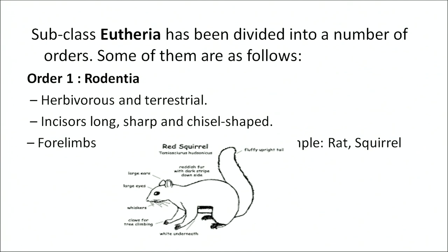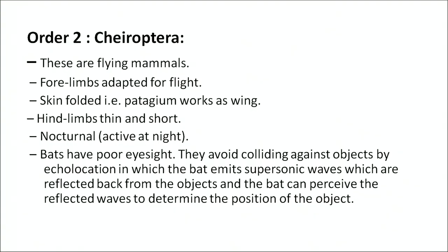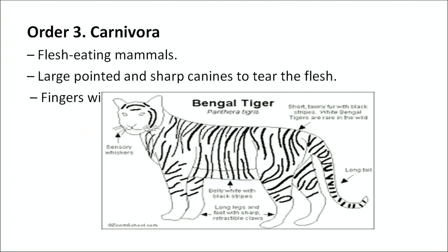Order Rodentia: herbivorous and terrestrial animals. Incisors are long, sharp, and chisel-shaped. Forelimbs are shorter than hind limbs. Examples: rat and squirrel. Order Chiroptera: flying animals — forelimbs adapted for flight; skin is folded and acts as a wing; hind limbs are thin and short. They are nocturnal (active at night). Bats have poor eyesight and avoid colliding with objects by echolocation, in which the bat emits supersonic waves reflected back from objects; the bat perceives the reflected waves to determine the position of the object. This method is similar to radar.